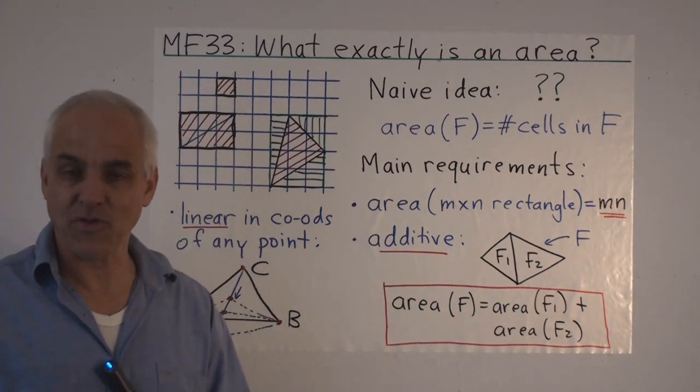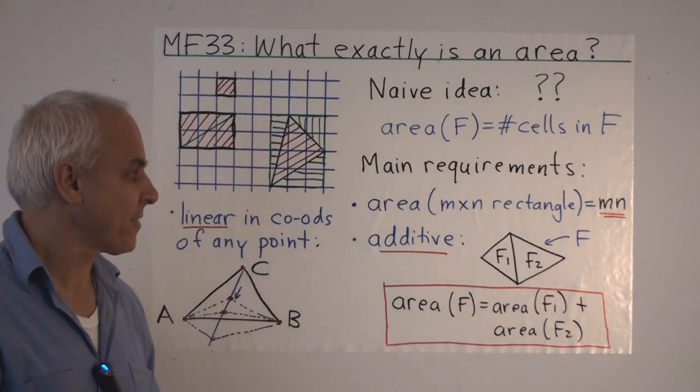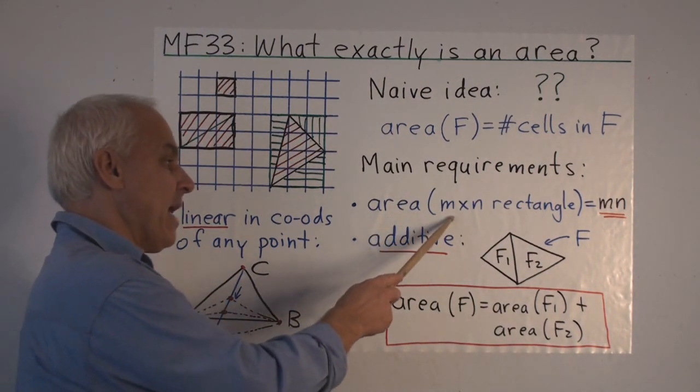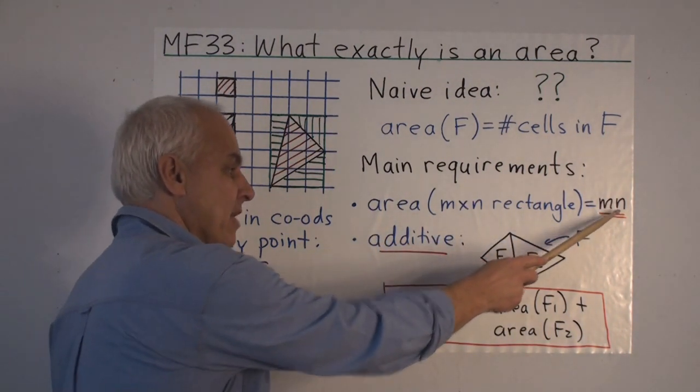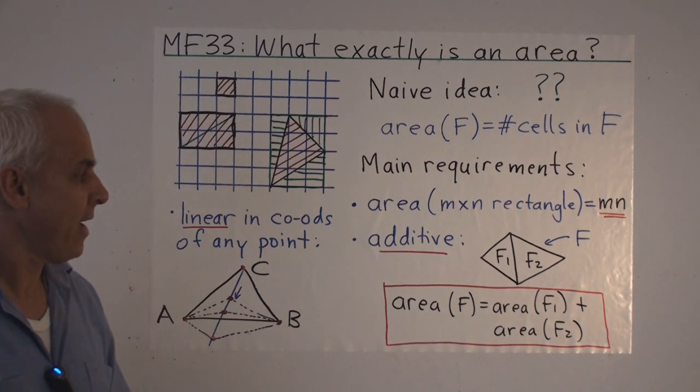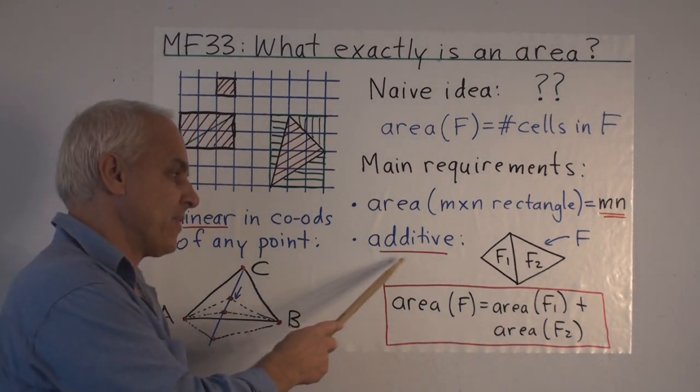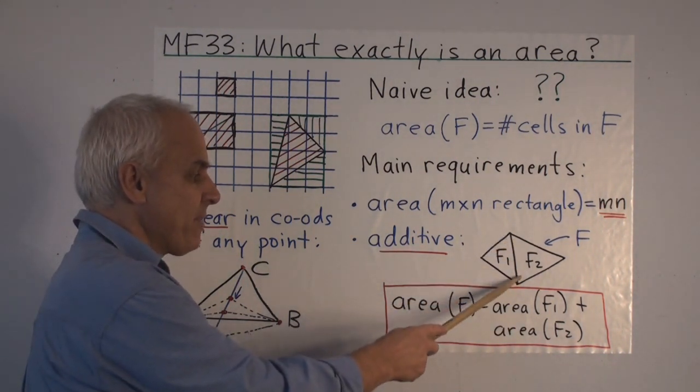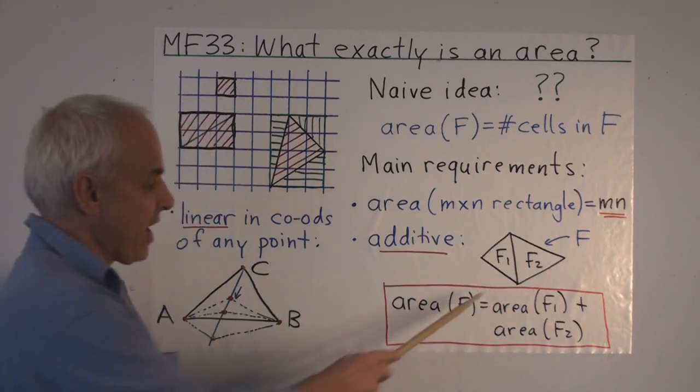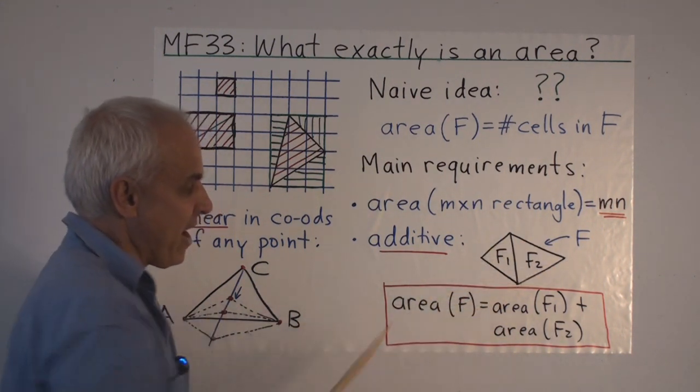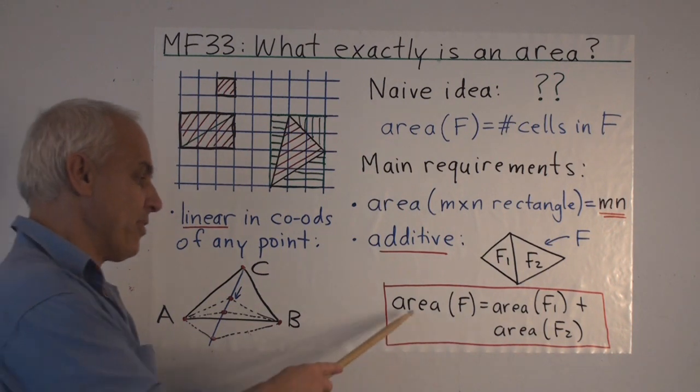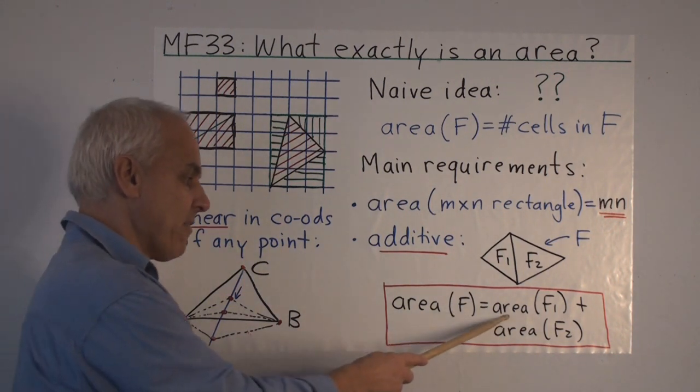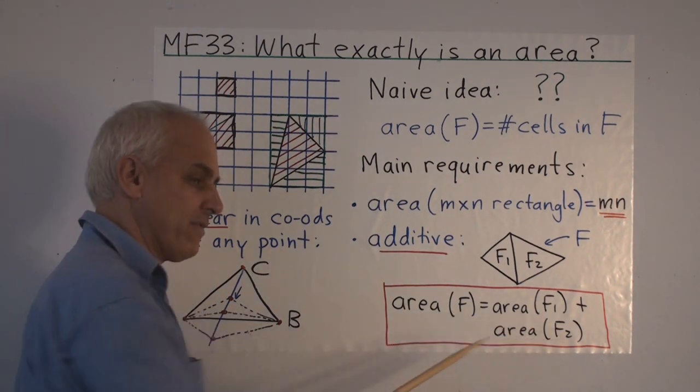So what do we really want this notion of area to satisfy? Well first of all the area of an m by n rectangle better be m times n. We want the notion to be additive. So if we have one figure f1 and another figure f2 right beside it, and together they make a figure f, then it's reasonable to suppose that the area of f is the sum of the area of f1 plus the area of f2.